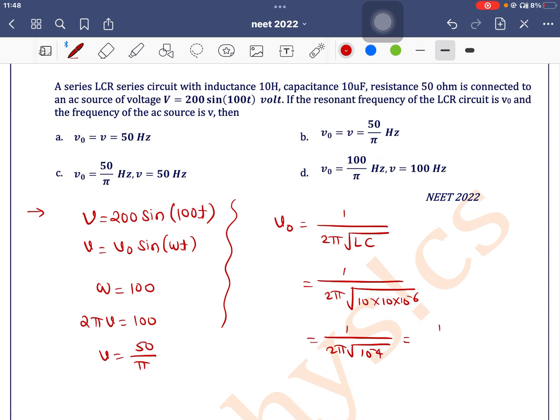It comes out to 1 by 2 pi times 10 to the power minus 2, which is equal to 100 divided by 2 pi, which is equal to 50 divided by pi.